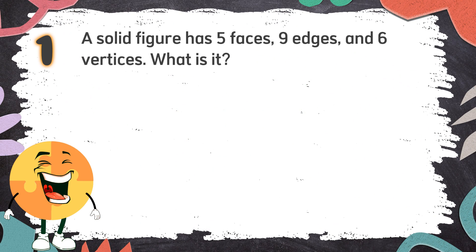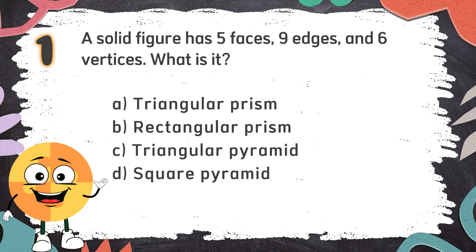Number 1: A solid figure has 5 faces, 9 edges, and 6 vertices. What is it? The choices are: A. Triangular prism, B. Rectangular prism, C. Triangular pyramid, D. Square pyramid.